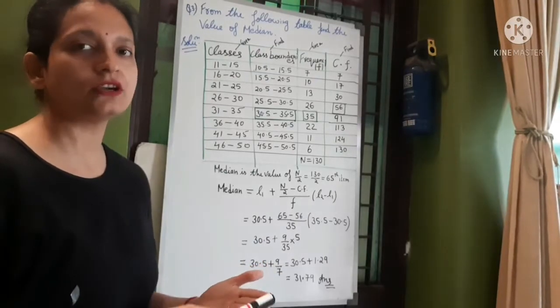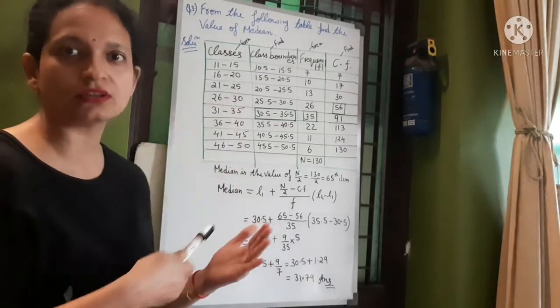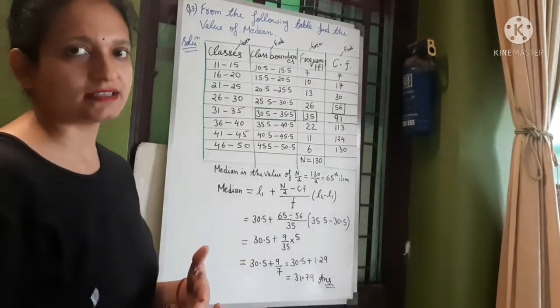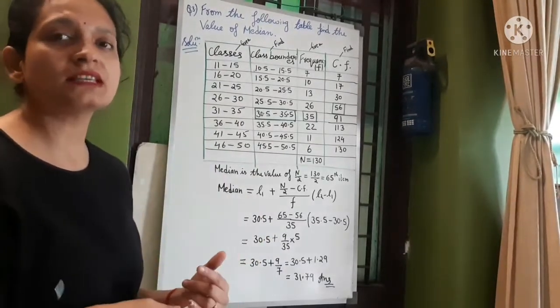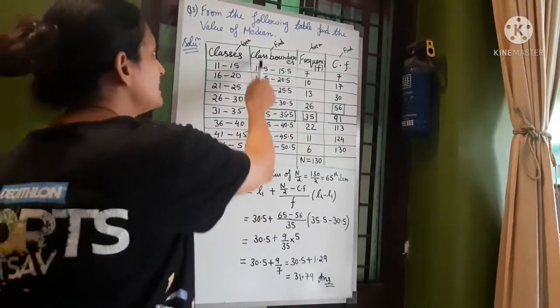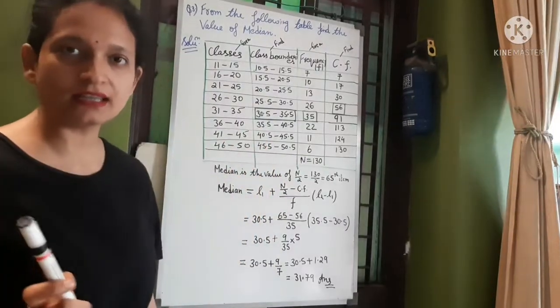20 to 30, 30 to 40, 40 to 50 continuous, which are the exclusive classes. And class boundaries we have to take. Inclusive classes we have to take class boundaries. What do we do?